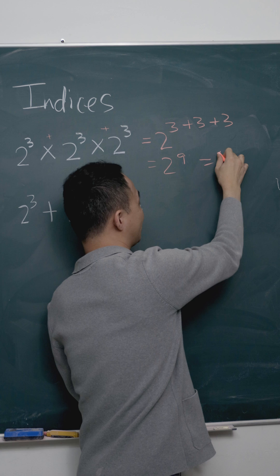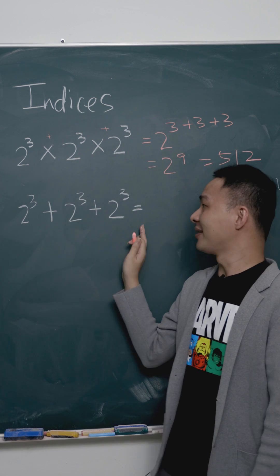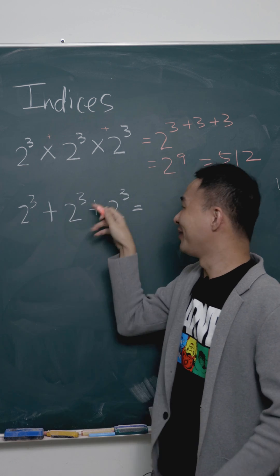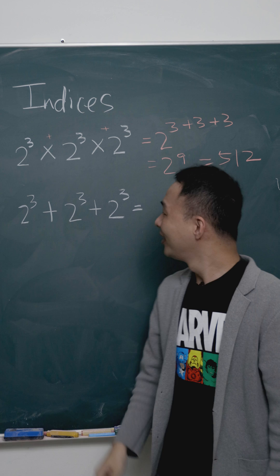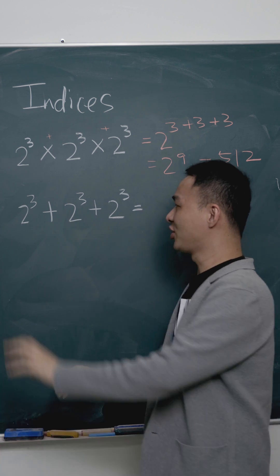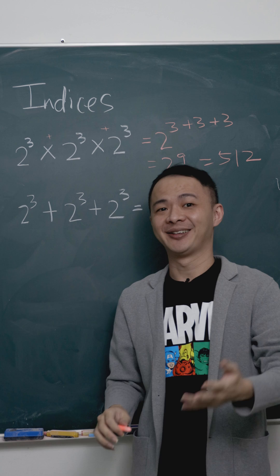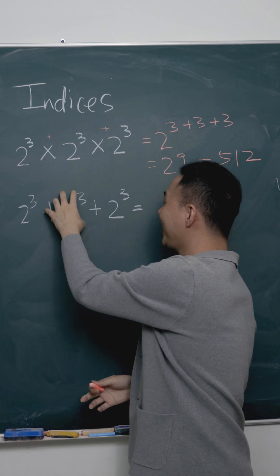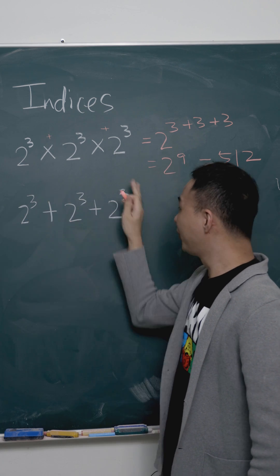But how about plus? This is not multiply - plus doesn't mean you multiply the power. Some students will use that logic, but this is not so. Plus, basically you just assume this is x plus x plus x. What do you get? x plus x plus x, you get 3x. So three of these same terms, when I plus them, it becomes 3 of 2 power of 3.